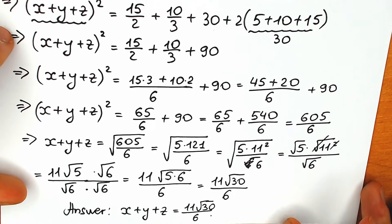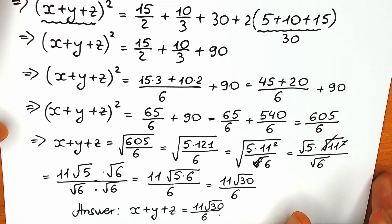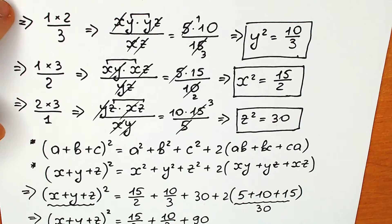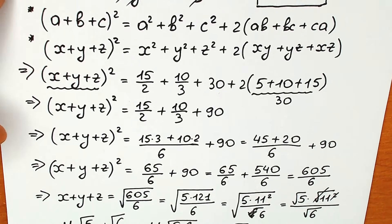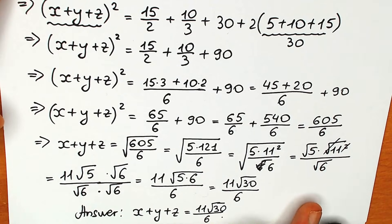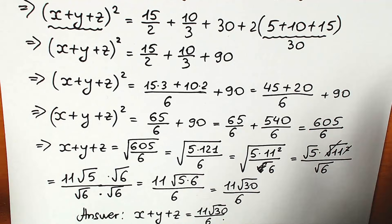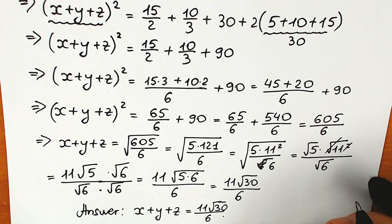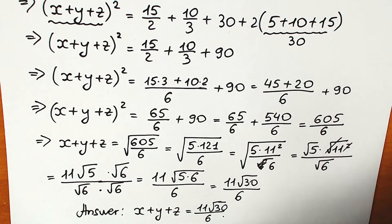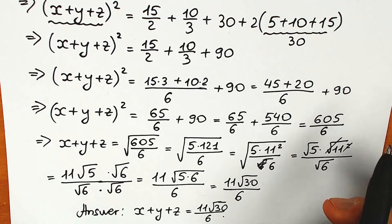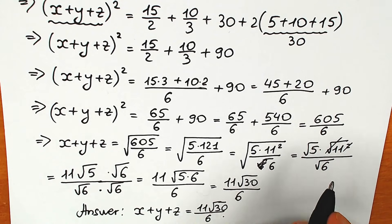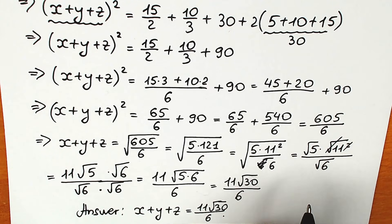So our answer: x plus y plus z equals 11 square root of 30 over 6. I'm very excited to see your solution and what you think about this type of question. If you have your answer, write it in the comments below. Thank you everyone for watching and for supporting this content — my main goal is to make math clear and understandable for students. I wish you all the best, take care, and see you in the next video.